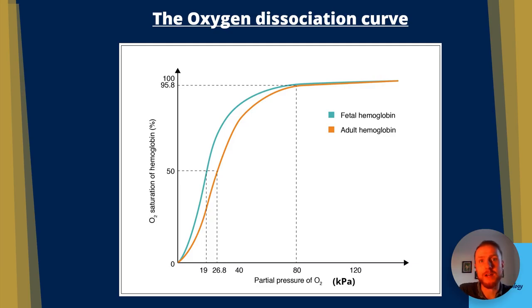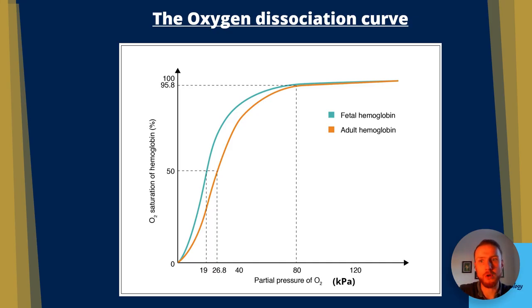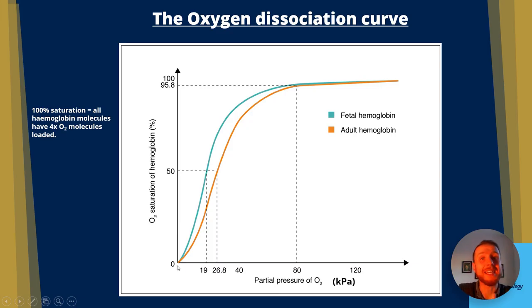Let's look at the oxygen dissociation curve — I always tell students to sketch this. On the y-axis, the dependent variable, we have the oxygen saturation of haemoglobin. 100% saturation means every haem group in every molecule of haemoglobin is bound to an oxygen molecule — all haemoglobin molecules have four oxygen molecules loaded. The curve is sigmoid: less steep at the beginning, more steep in the middle, and less steep at the end where it plateaus.